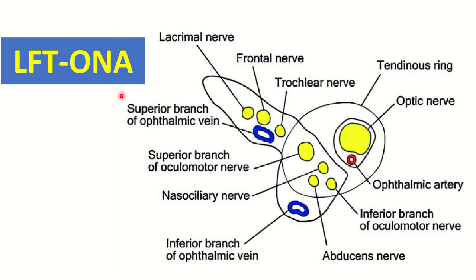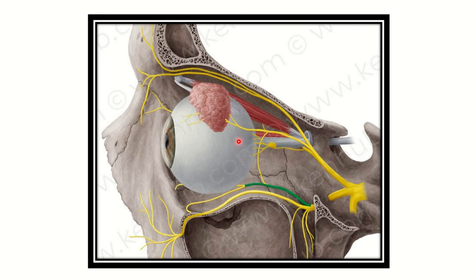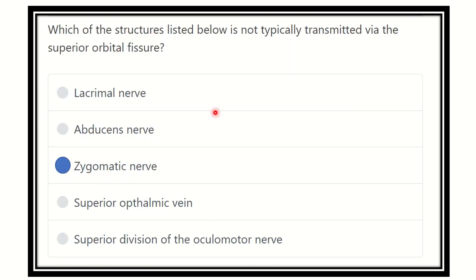These are the structures which pass through the superior orbital fissure. The mnemonic 'LFT on A' — meaning Liver Function Test on A — makes it very easy to remember all the structures passing through the superior orbital fissure. Remember: the superior orbital fissure contains nerves and veins; there is no artery. Here we can see the orbital cavity with the nerve components passing through the superior orbital fissure.